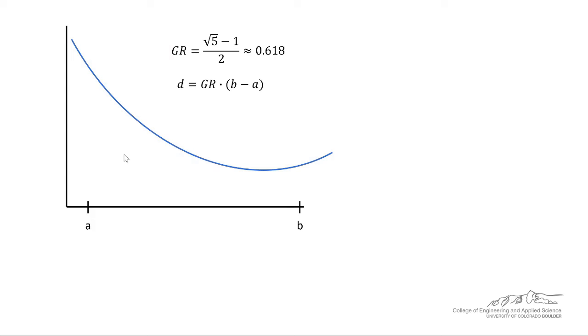Now this is going to be an iterative process. During each iteration, we're either going to change little a or little b, but not both. So it's similar to the bisection technique in that you're changing either the lower or upper bounds during each iteration. After we have d, we're going to calculate this parameter known as x1, which is d above a.